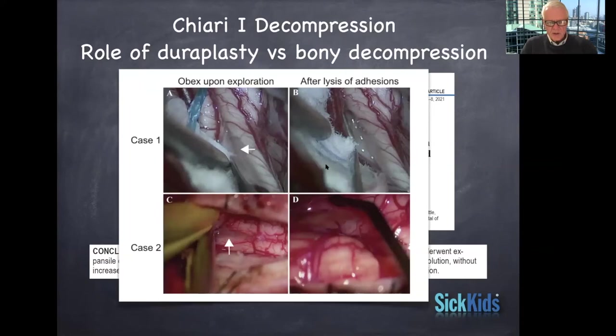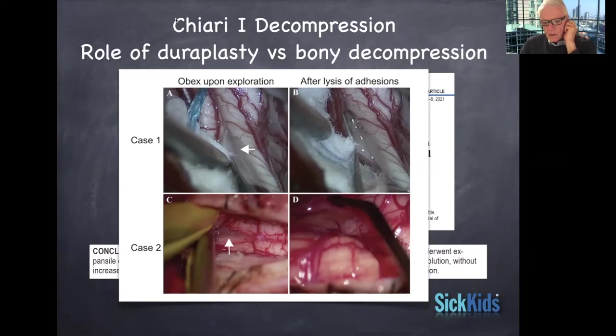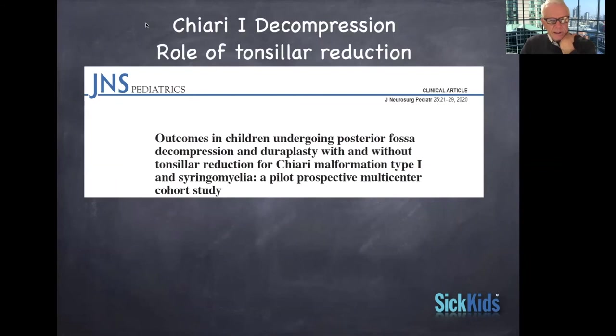Here's the example of obex exploration from this article — showing lysis of adhesions and the obex that's been opened up, after lysis of adhesions. You have to be good at microneurosurgery to do a good Chiari decompression. It's a great operation — I would say it's an operation that junior to mid-range level residents should be able to do, as it's common at many hospitals.